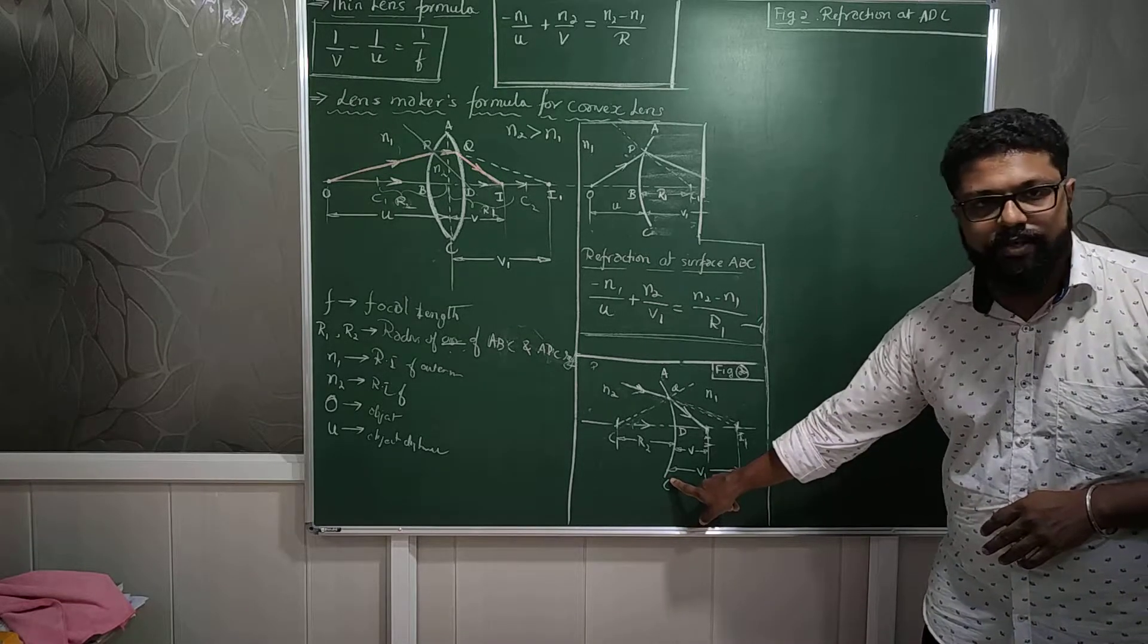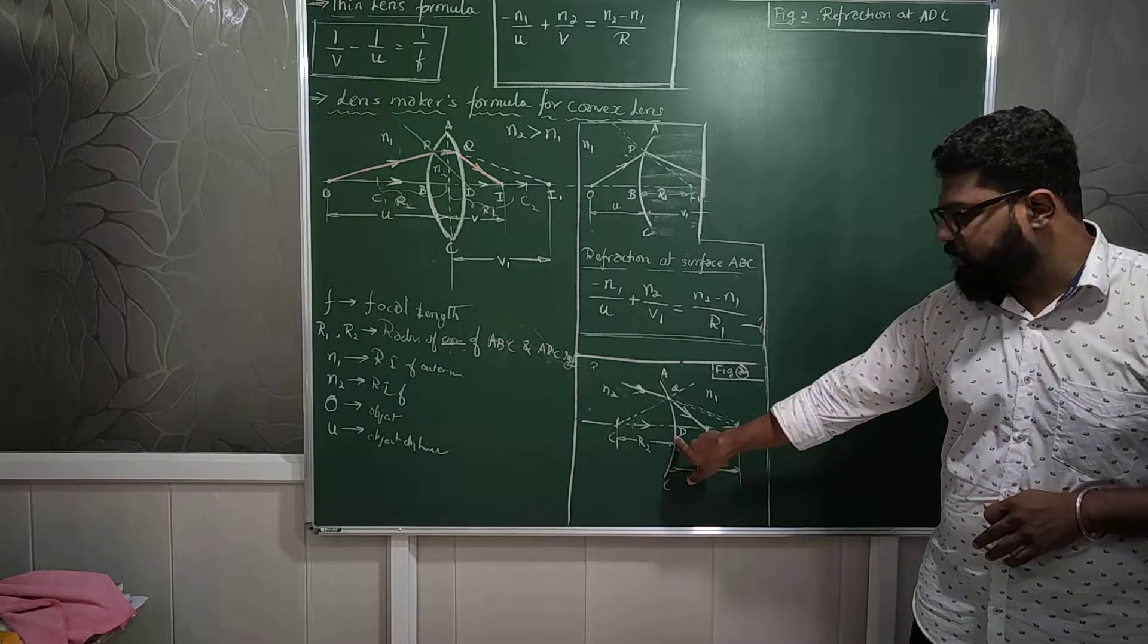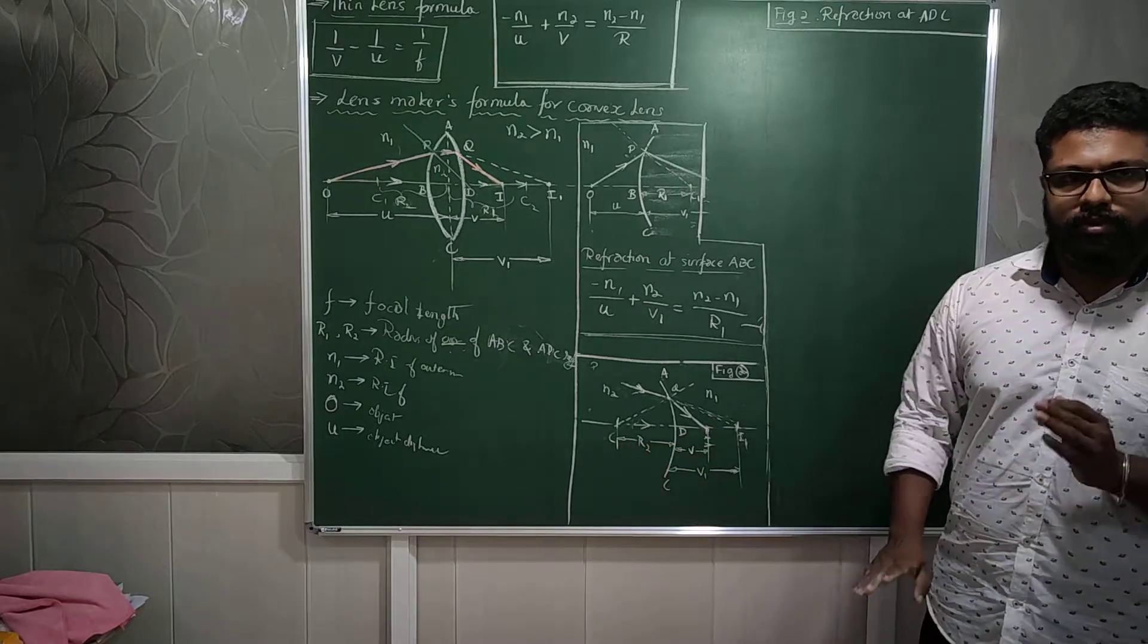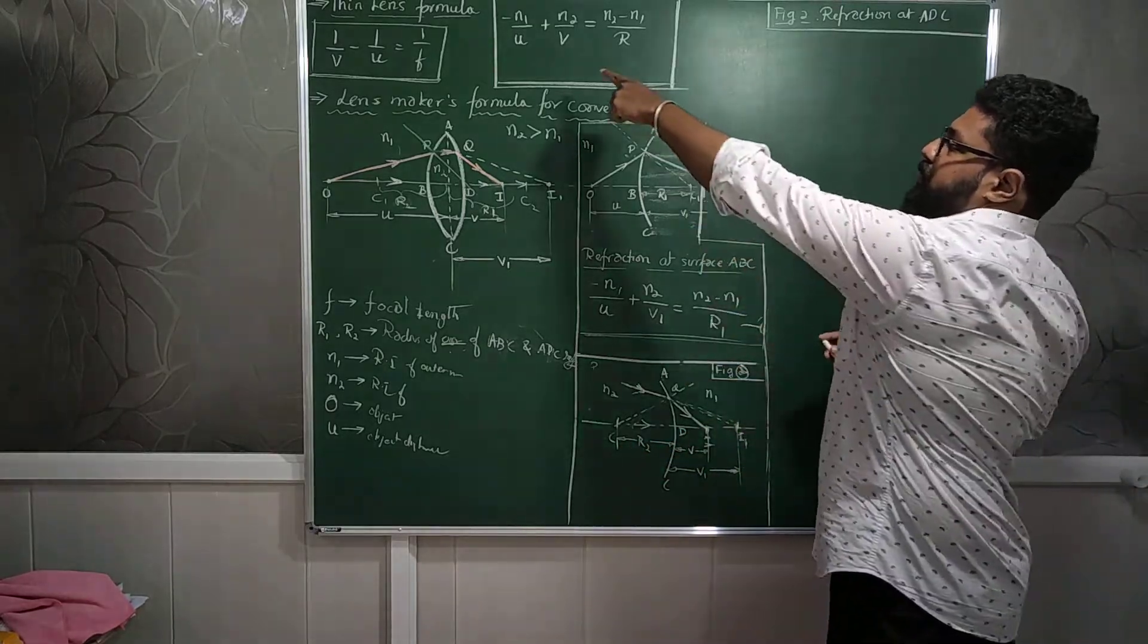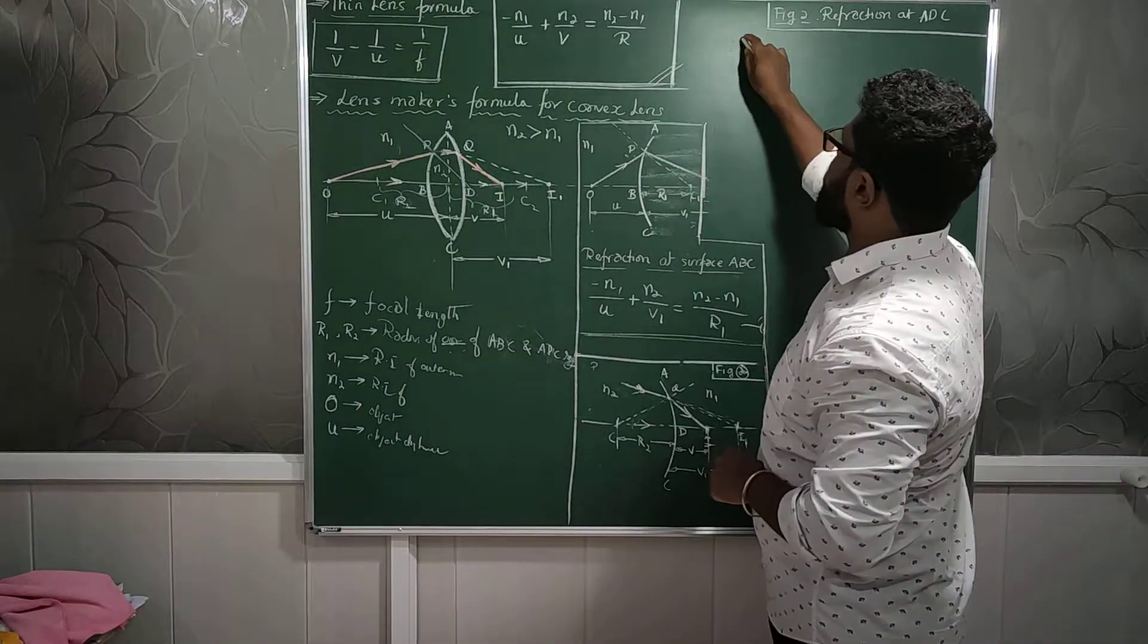So this will be the object distance that I am considering as V1. This will be the source. That is why source distance means object distance is V1. This is the image distance V. And this is the radius of curvature R. So using this, I will substitute in my general formula of lens.